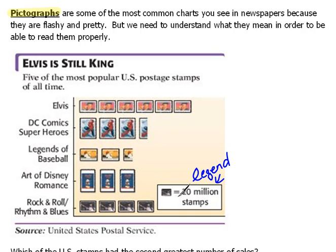In this case, the legend tells us that each icon represents 20 million stamps. So if we look at the Elvis ones, we count: 20, 40, 60, 80, 100, 120 million stamps. That's what that row represents.